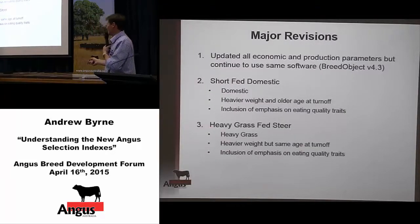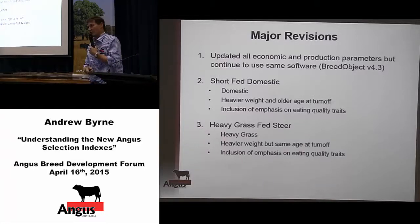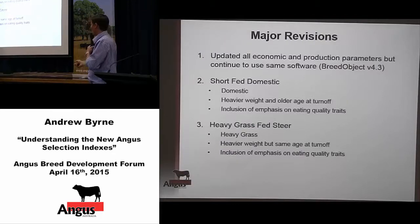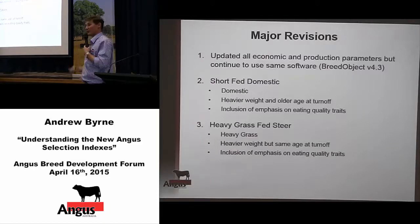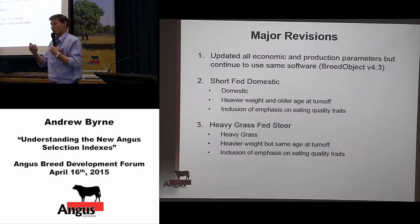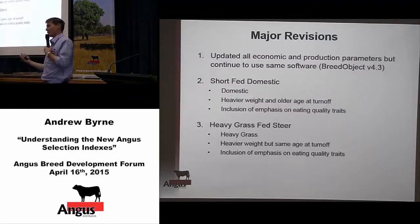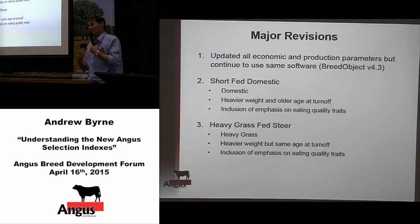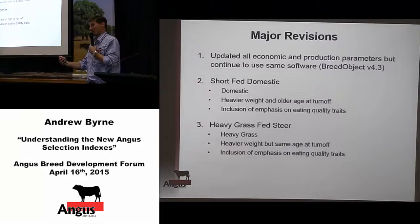The heavy grass-fed steer index is effectively replaced by the heavy grass index. It was the index which probably changed the least. Again, it was a slightly heavier weight — from 320 kilos endpoint carcass weight to 340 kilos — but still at 22 months of age. Similarly to the domestic index, there's an inclusion of emphasis on eating quality traits within that index.